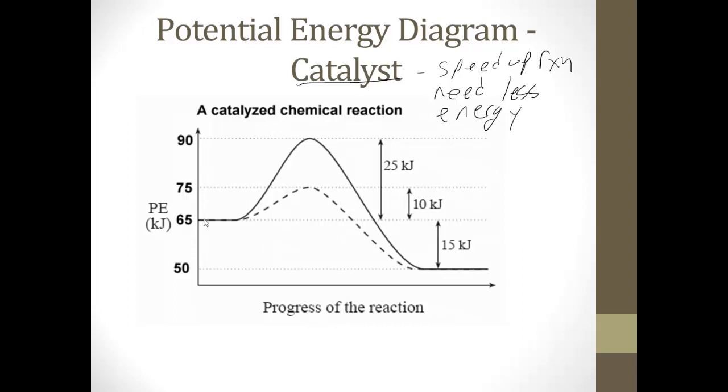So here's a normal chemical reaction. Here's our potential energy of the products. I'm sorry, here's our potential energy of the reactants. Here's our potential energy of the products. And normally, here's your activation energy. And in this diagram, it has it at 25 kilojoules. So you've got to put in 25 kilojoules to get everything started. And you end up at the end of the day with a net 15 kilojoules given off.